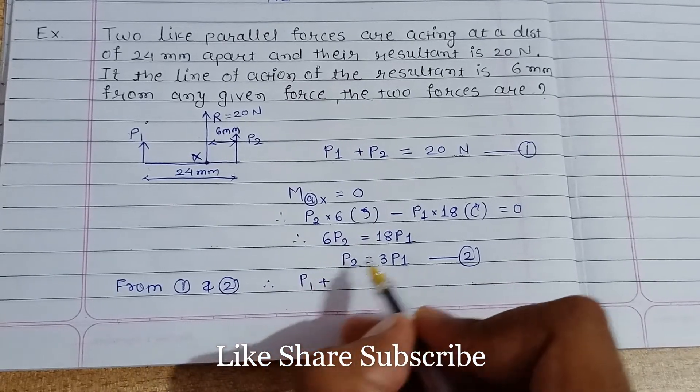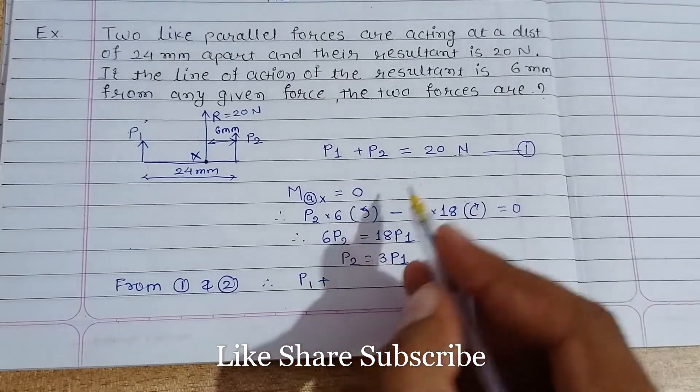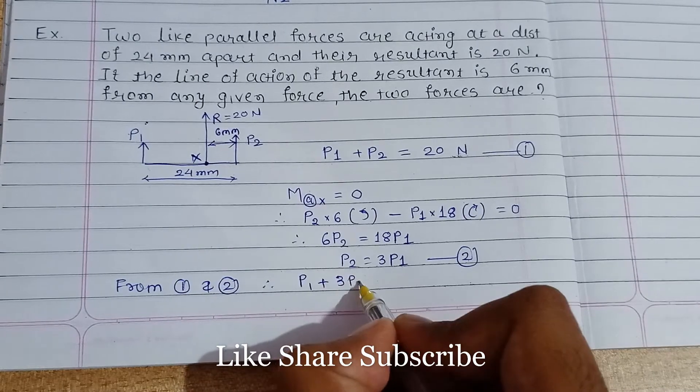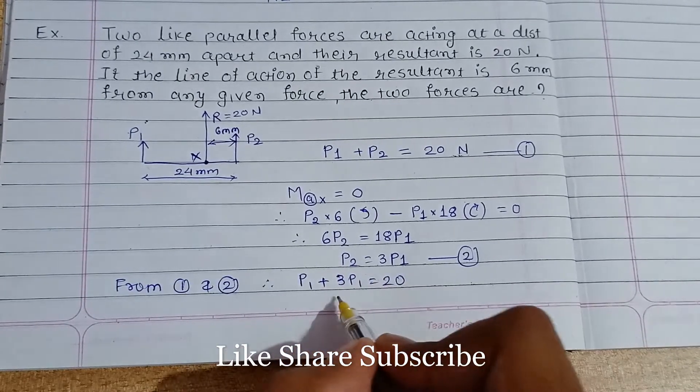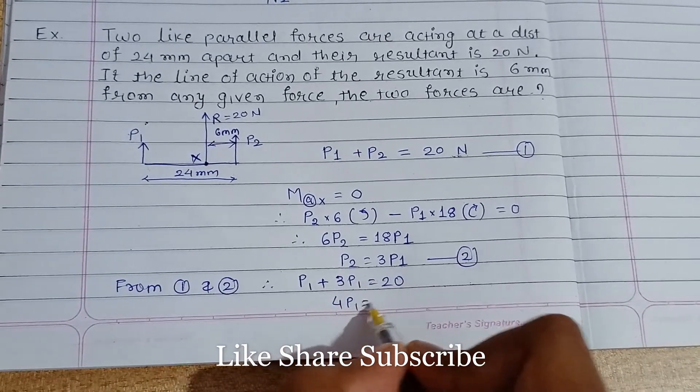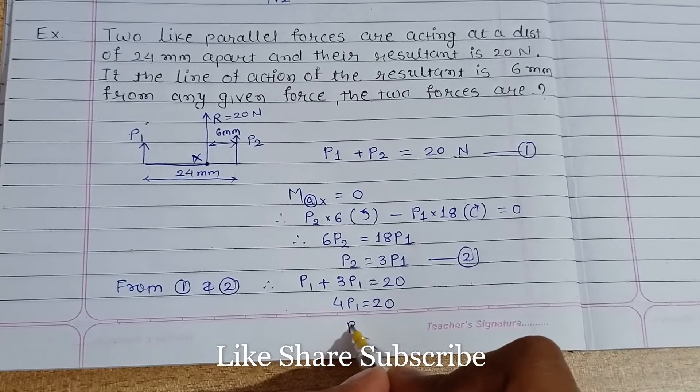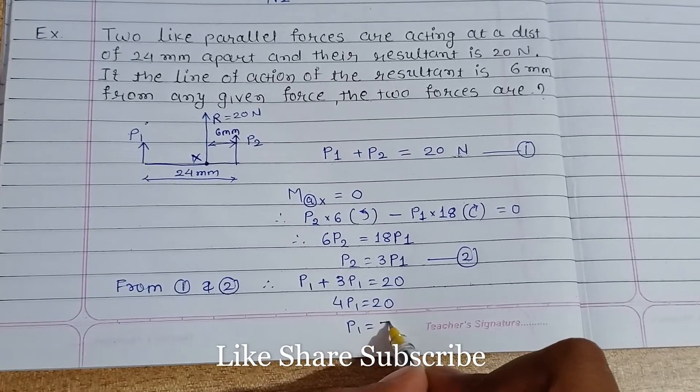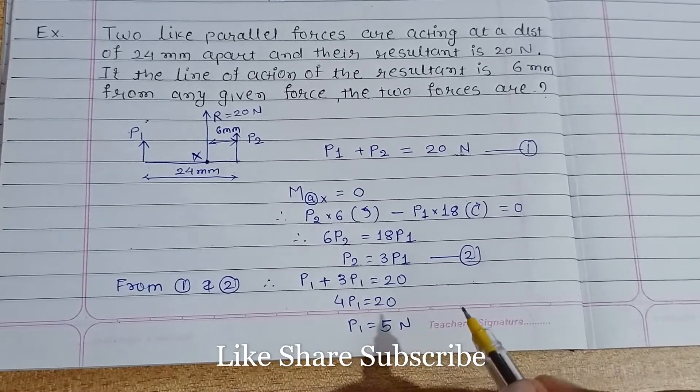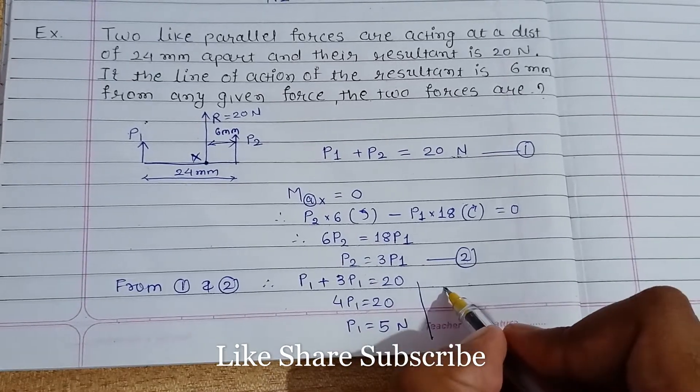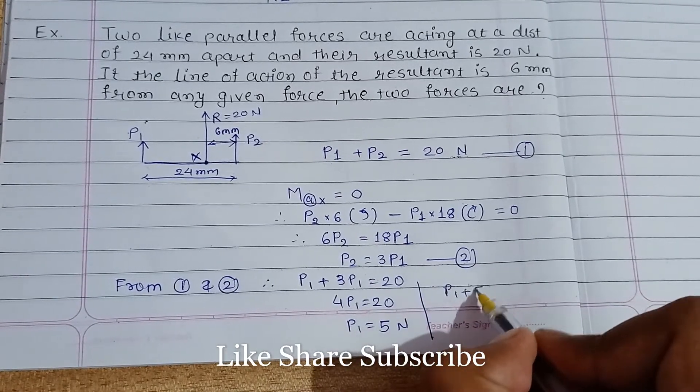P1 plus, let's put value of P2 in this equation, 3P1 is equals to 20. 4P1 is equals to 20. P1 is equals to 5 newton.